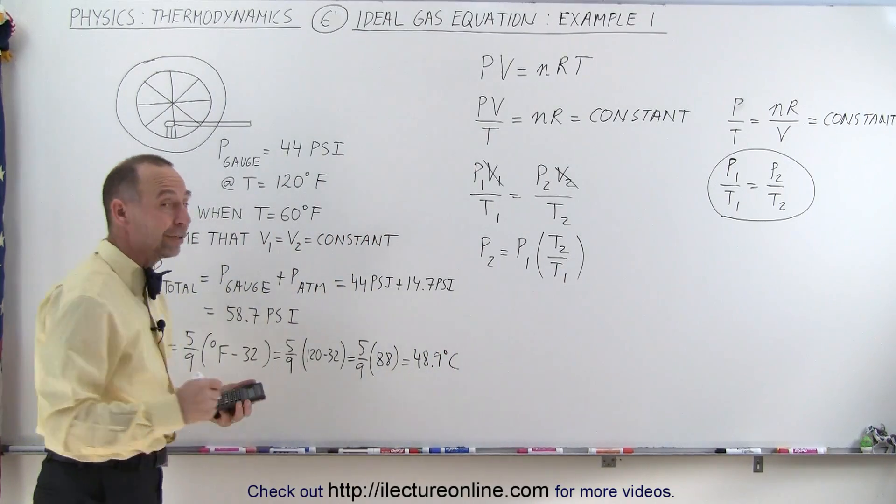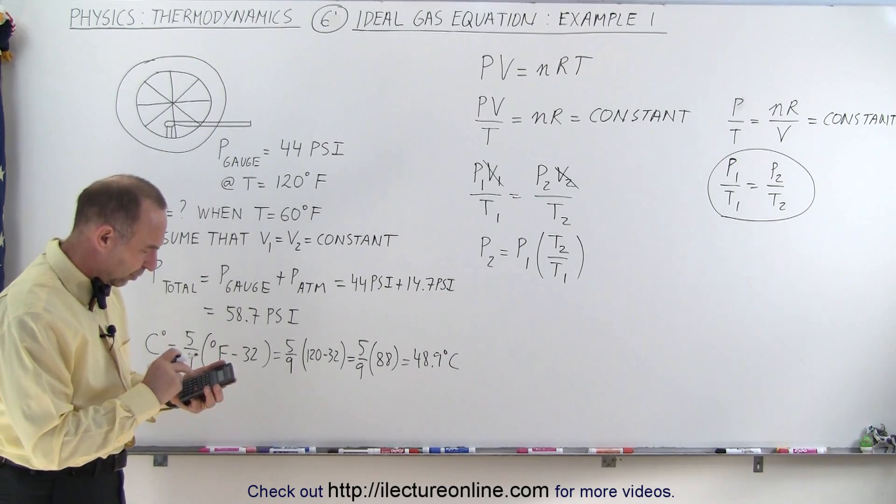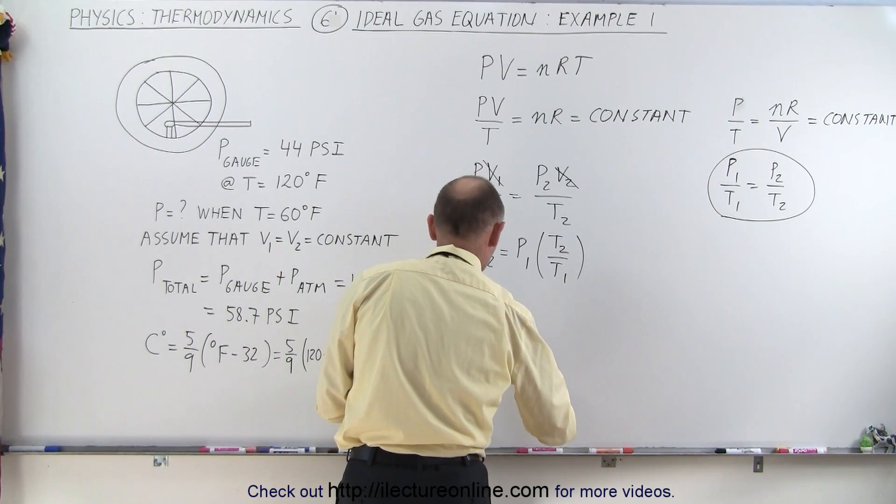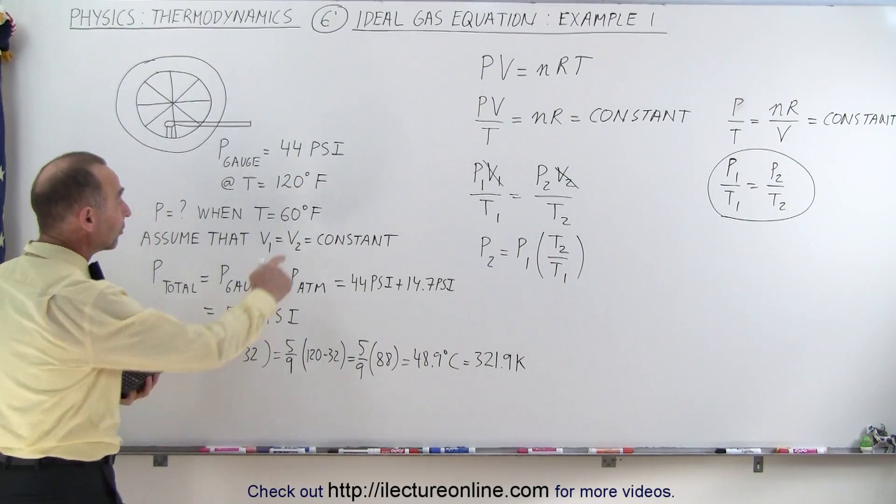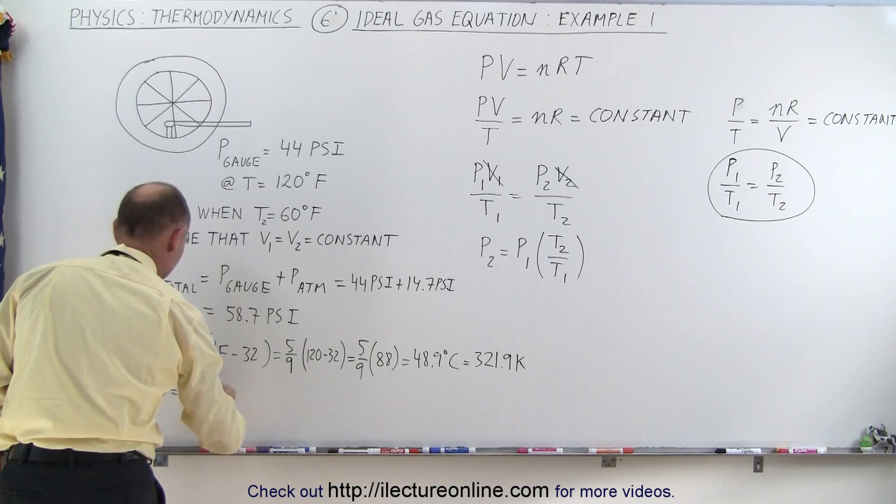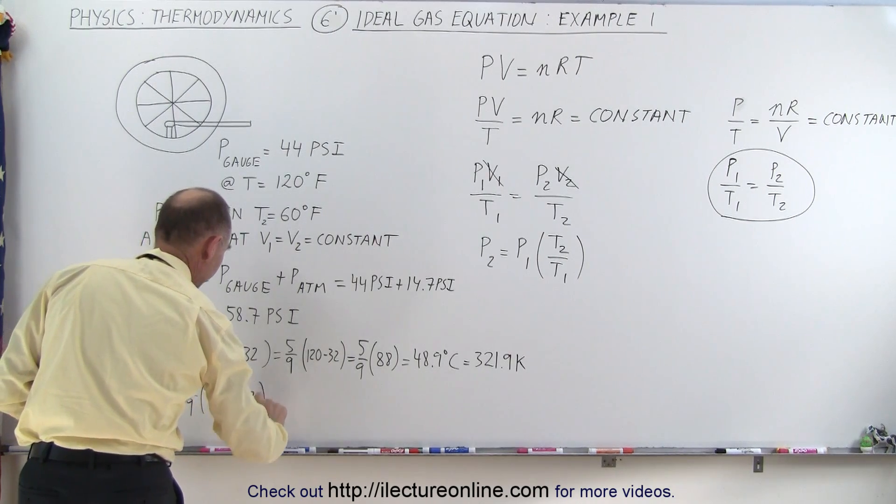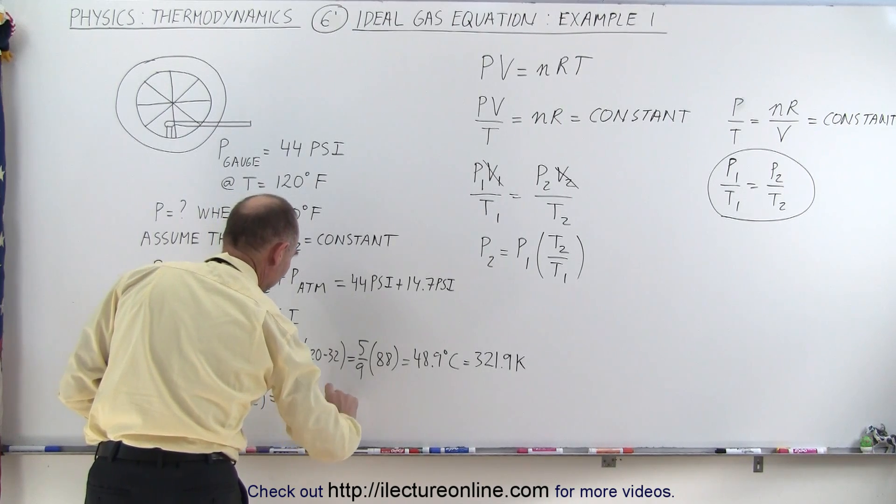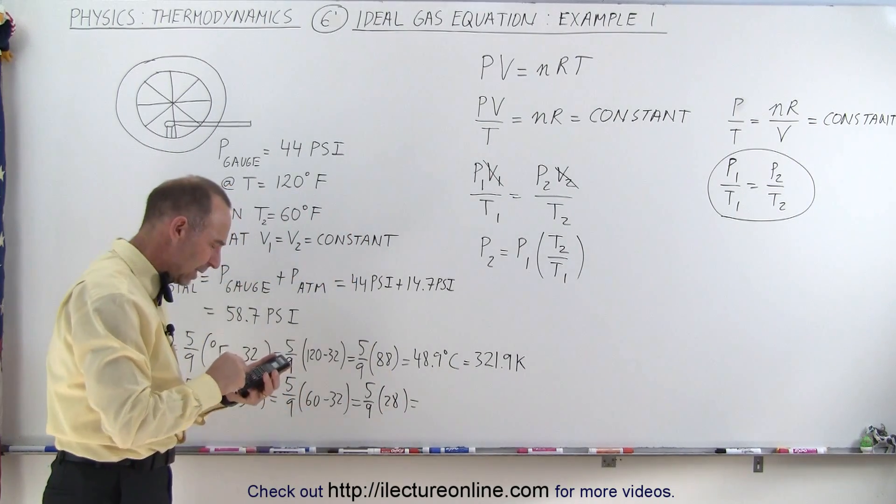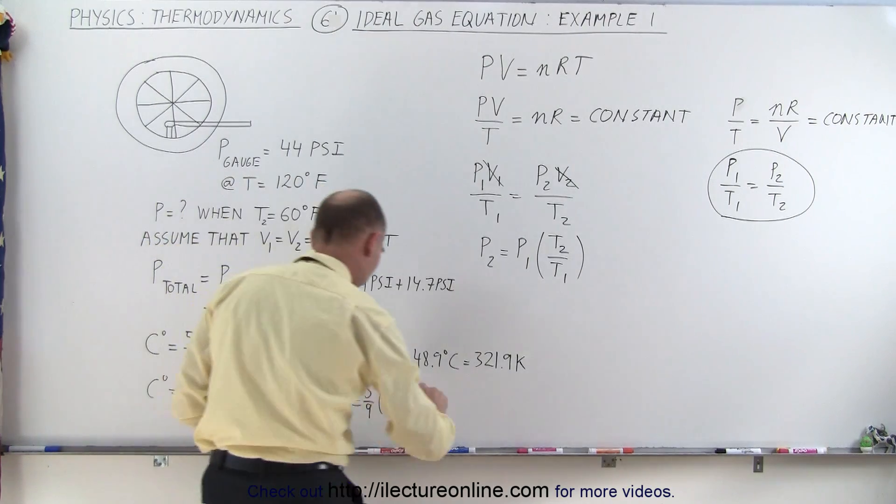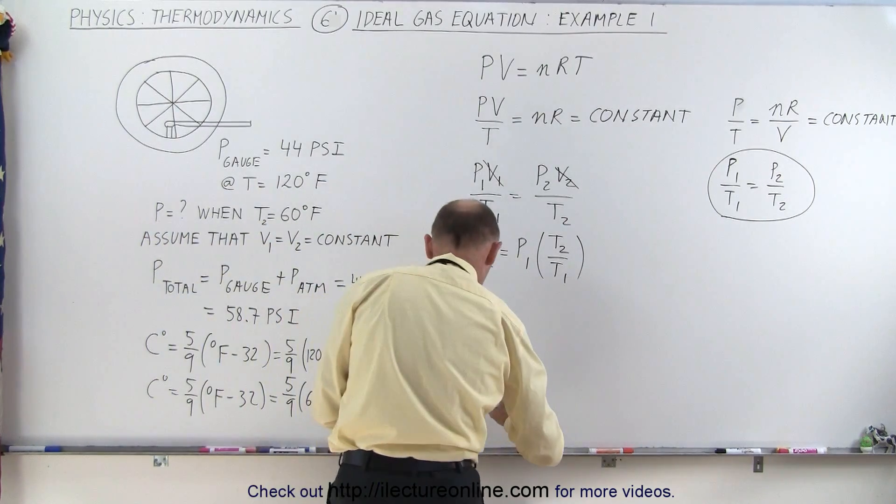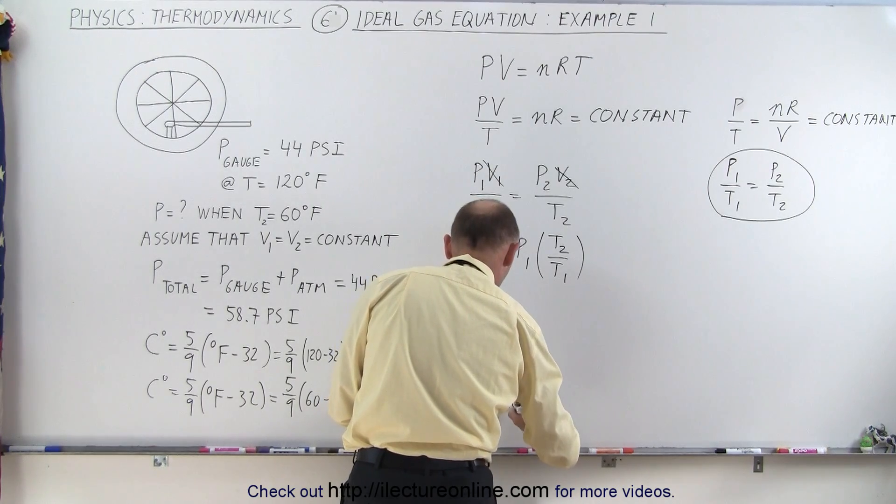Now, converting that to Kelvin degrees, we have to add 273, so plus 273, and that gives us 321.9 Kelvin. We'll do that again for the other temperature, temperature 2, so T2 is equal to 60 degrees. So centigrade degrees is equal to 5 over 9 times degrees Fahrenheit minus 32. So that's 5 over 9 times 60 minus 32, which is 5 over 9 times 28. And so we get 28 divided by 9 times 5 equals 15.6 degrees centigrade. And we add to that 273 to get temperature in Kelvin degrees, that would be 288.6 Kelvin.